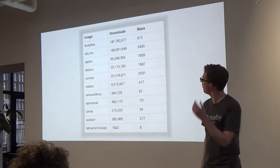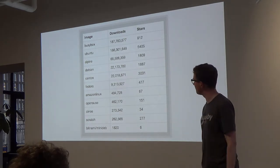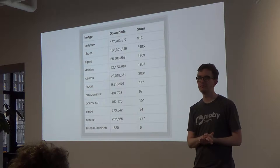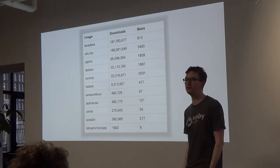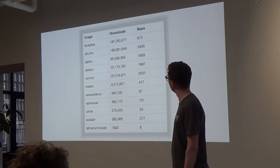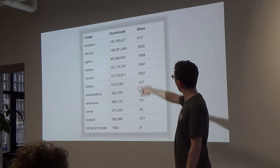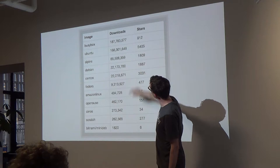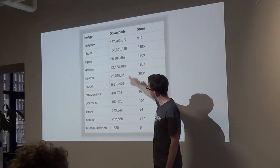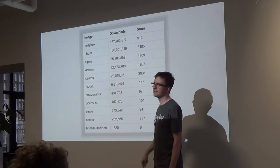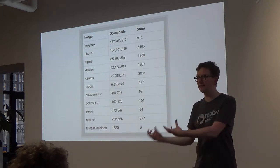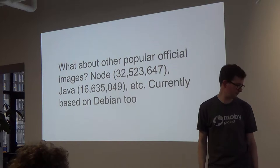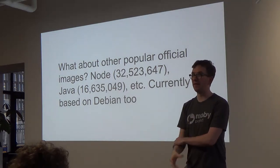So what does that tell us? You end up with data like this — a sample of the most popular images downloaded from Hub. As a community of Docker users, we've been pulling a lot of Ubuntu. Alpine is pretty popular too, but what you see is that these are mostly operating systems. Aren't containers supposed to be about individual processes and applications? We'll come back to that, because that's an awful lot of large file systems.